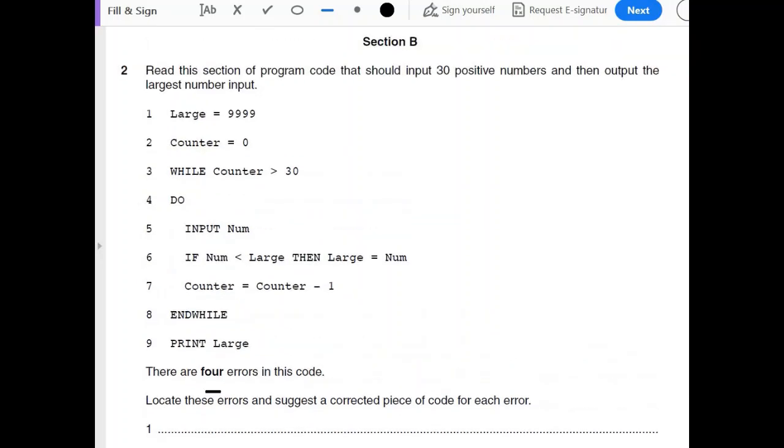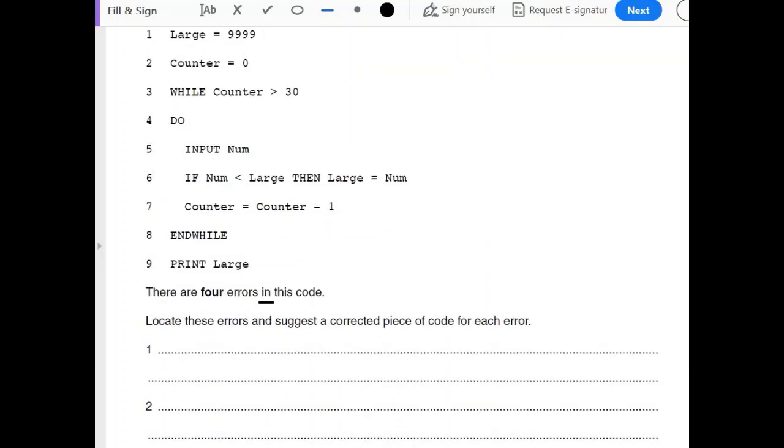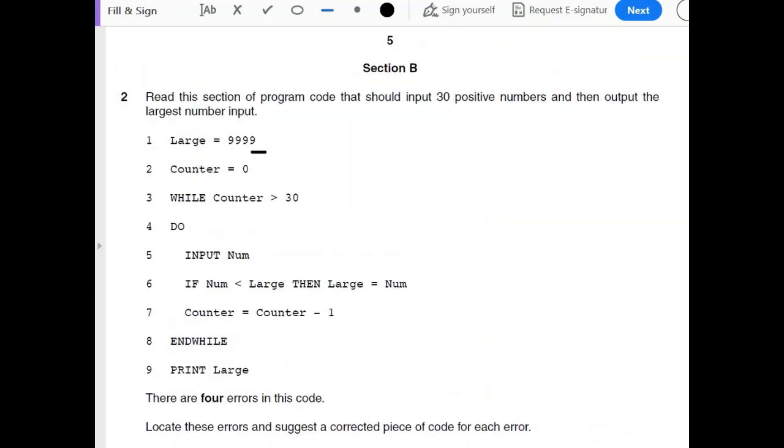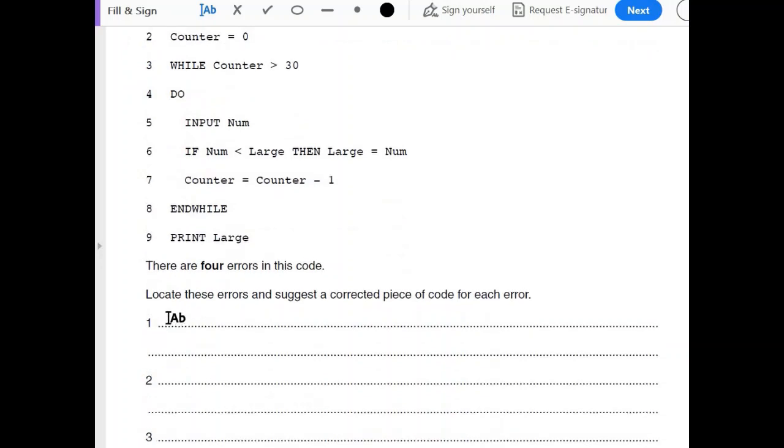That should input 30 positive numbers and then output the largest number imported. This is the algorithm given and it says there are four errors in this code. Locate these errors and suggest a corrected piece of code for each error.